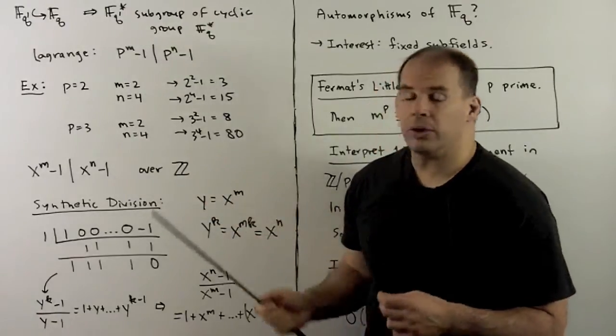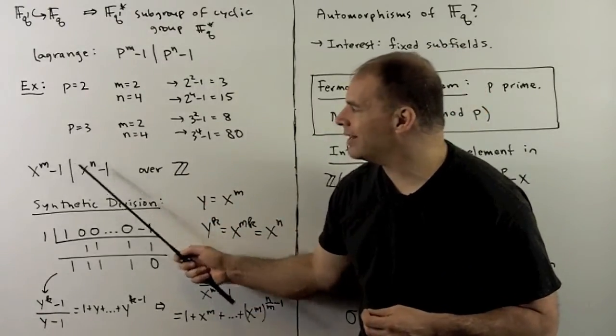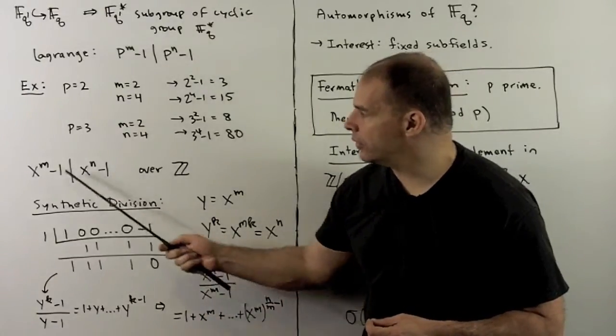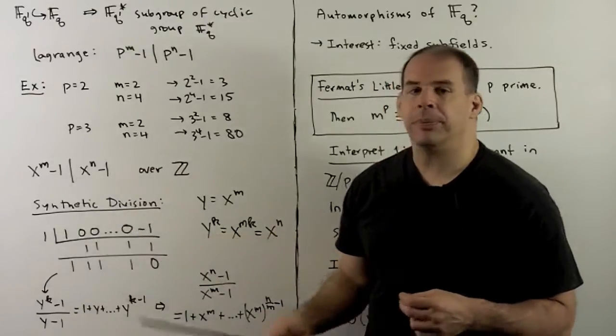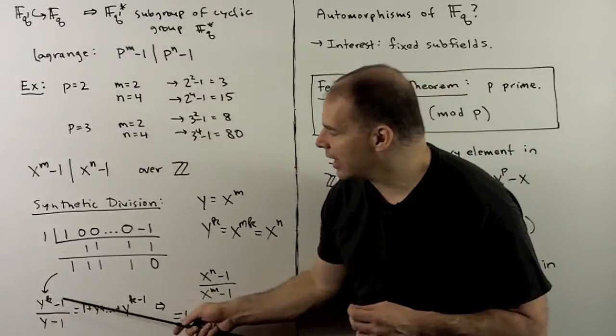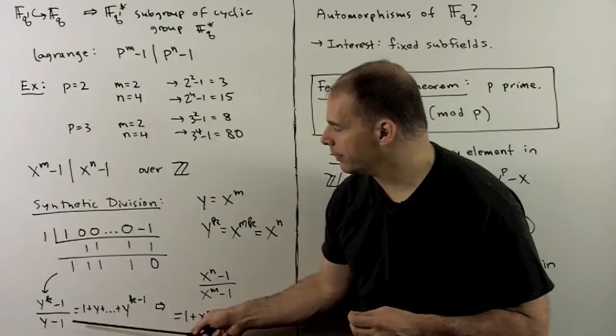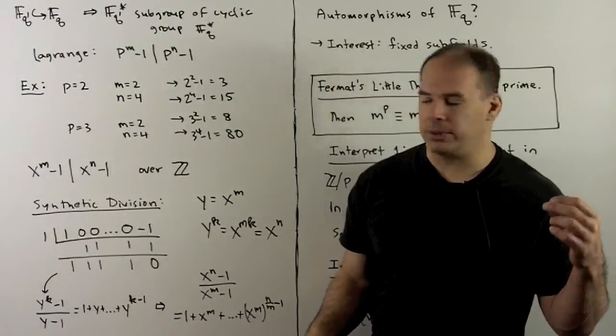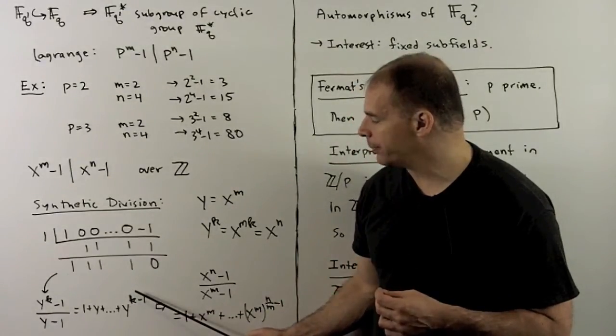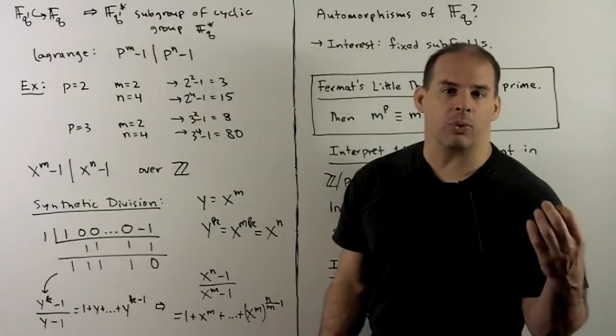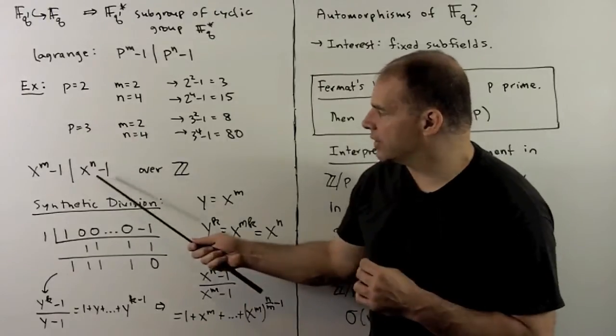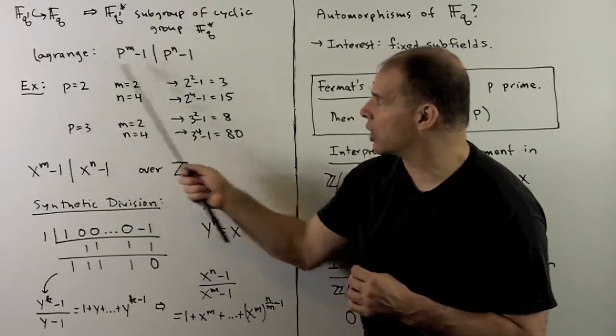Now, for the general result, first I want to show that the polynomial x to the p^m minus 1 divides x to the p^n minus 1 over the integers. To do this, I'll let y be equal to x to the m. Because m divides n, we have x to the n is some y to the k. And now I want to show that y to the k minus 1 is divisible by y minus 1. For that, we use synthetic division. That gives that this quotient is 1 plus y up through y to the k minus 1. We substitute back in x to the m for y, and that gives our polynomial over the integers as promised. So that gives this, we substitute in p for x, and that's our result.